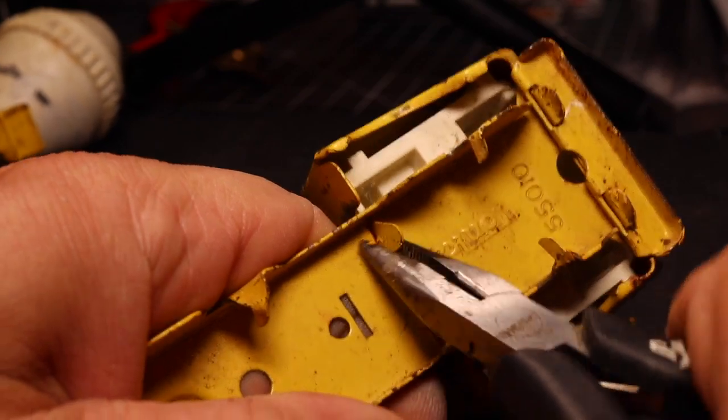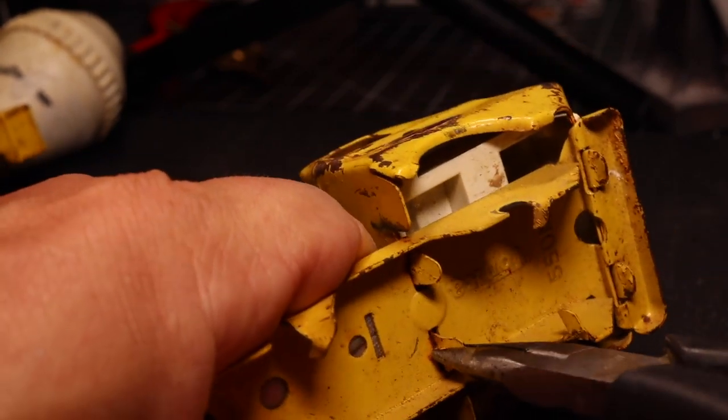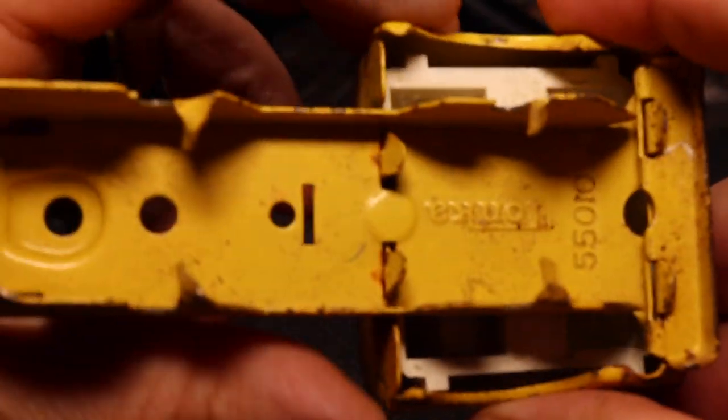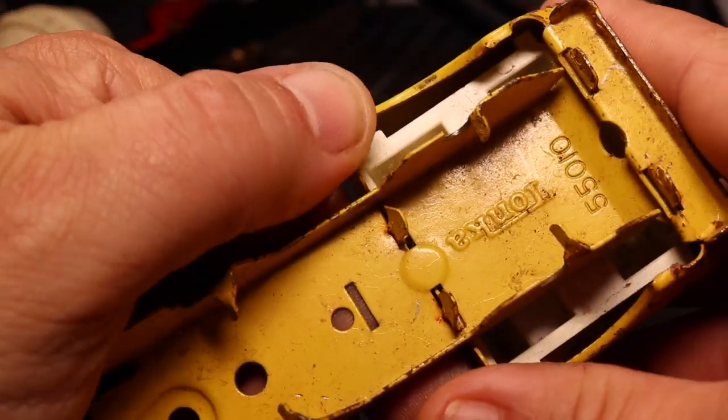And last but not least, the cab portion. There are also two tabs there. You simply bend them straight and pop the cab off.